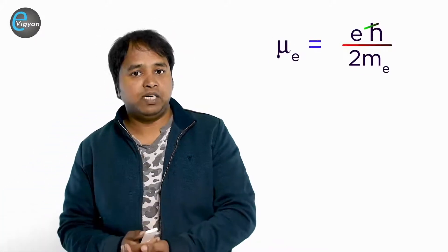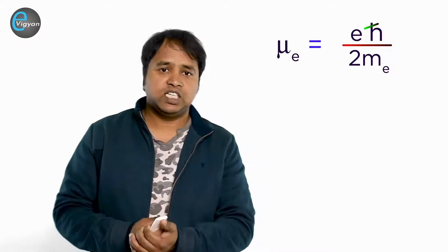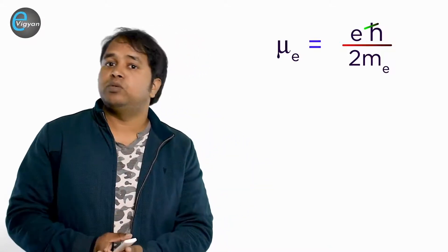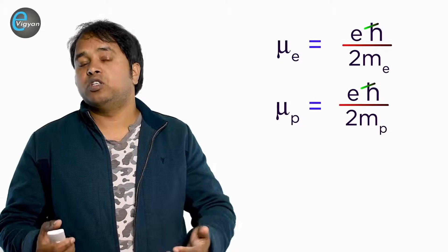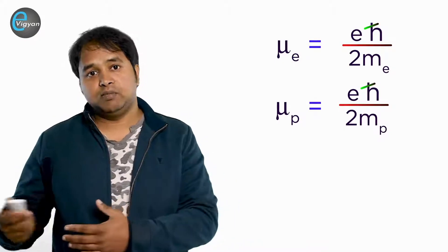The magnetic moment of electron is equal to eℏ/2mₑ, where mₑ is the mass of the electron. And the magnetic moment of the proton is equal to eℏ/2mₚ, where mₚ is the mass of the proton.